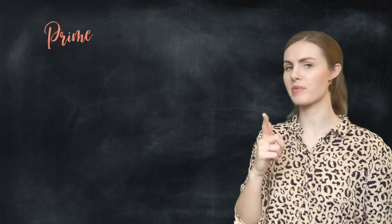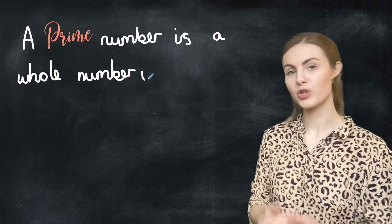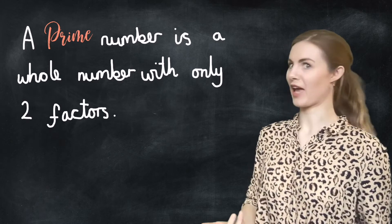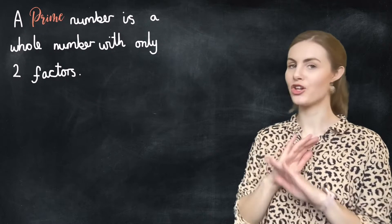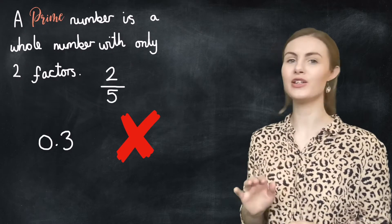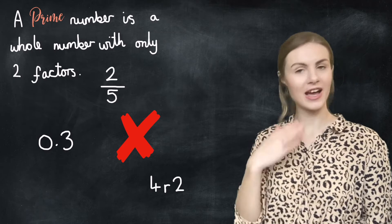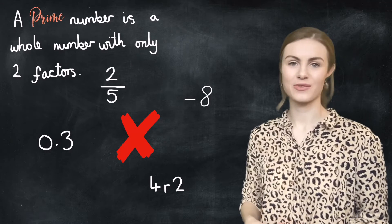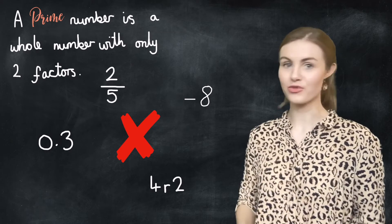Starting with prime numbers: a prime number is a whole number which only has two factors. By whole number I mean no fractions, no decimals, and absolutely no remainders. I'm also only talking positive numbers, so no negatives. This is less complicated than it sounds — it's just our counting numbers, so one, six, 104.